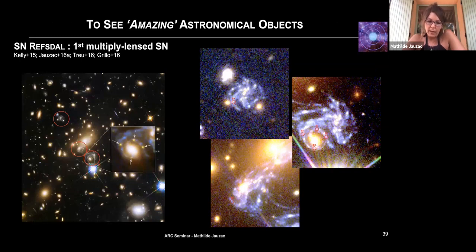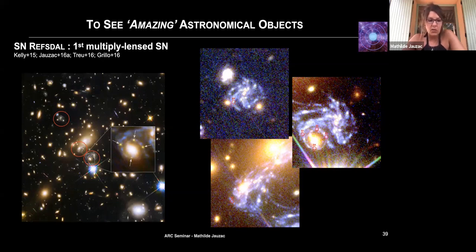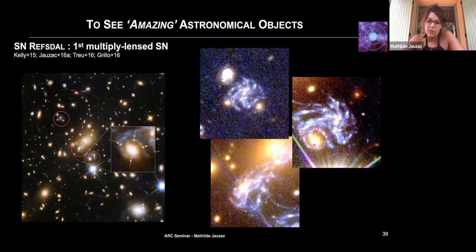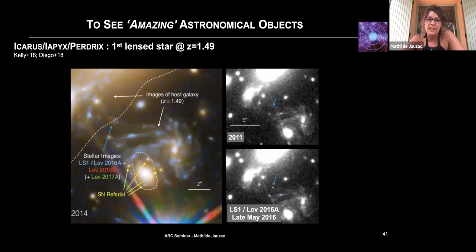Last but not least, really nice things you can also do with lensing and Frontier Fields slash Buffalo data: you can detect really cool objects. This is the first strongly lensed, multiply-imaged supernova, nicknamed Reptiles. We could predict the reappearance of one of its images and most of the lensing teams got it right, demonstrating that our mass modeling techniques are systematic-limited but not bad. In the same galaxy as Reptiles, we also observed the first lensed star at a redshift of 1.5, strongly lensed with a magnification factor predicted to be more than 10,000.